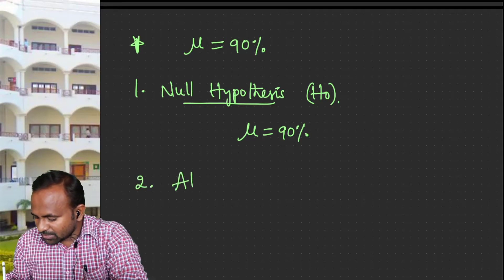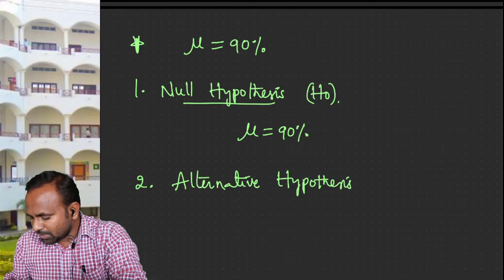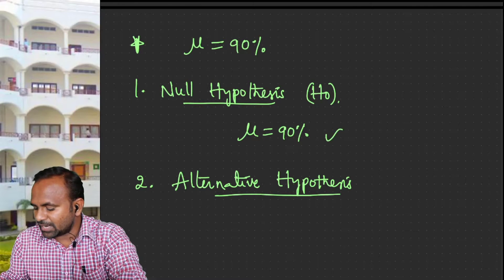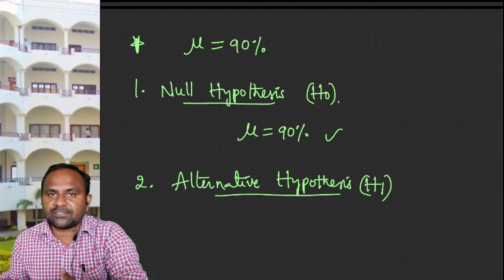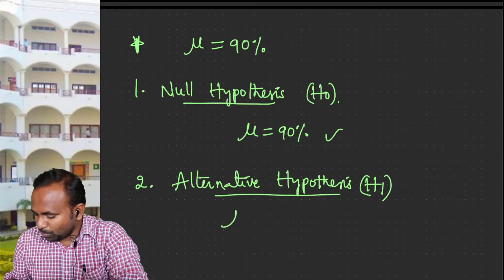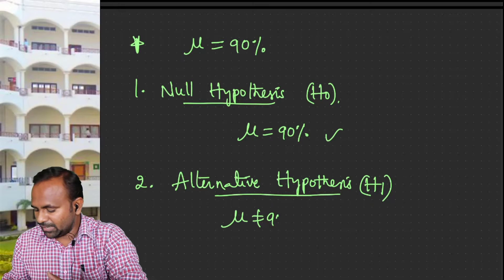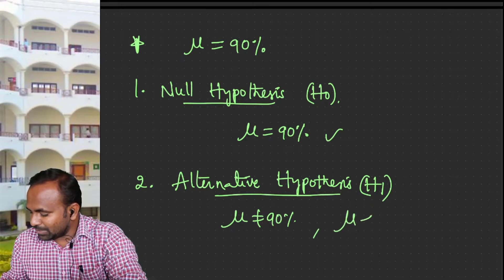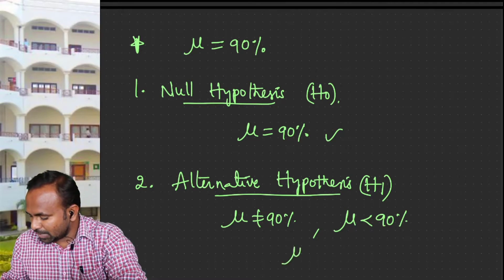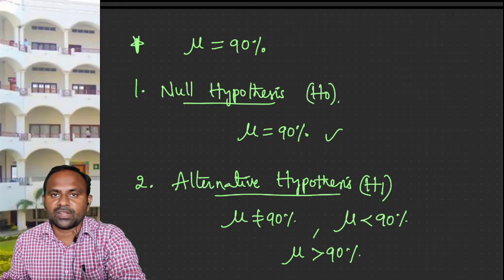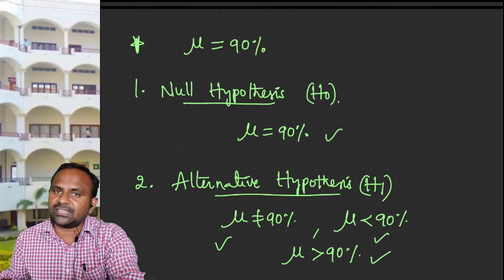The second one is alternative hypothesis. The alternative hypothesis is the statement about the parameter, but in a contradictory way to the null hypothesis. The alternative hypothesis, denoted with H1, is written in a contradictory way which differs from the null hypothesis — something like mu not equal to 90 percent, meaning the vaccine is not effective with 90 percent guarantee. Or you may write mu less than 90 percent, or mu greater than 90 percent. The alternative hypothesis is the statement which is contradictory to the null hypothesis.